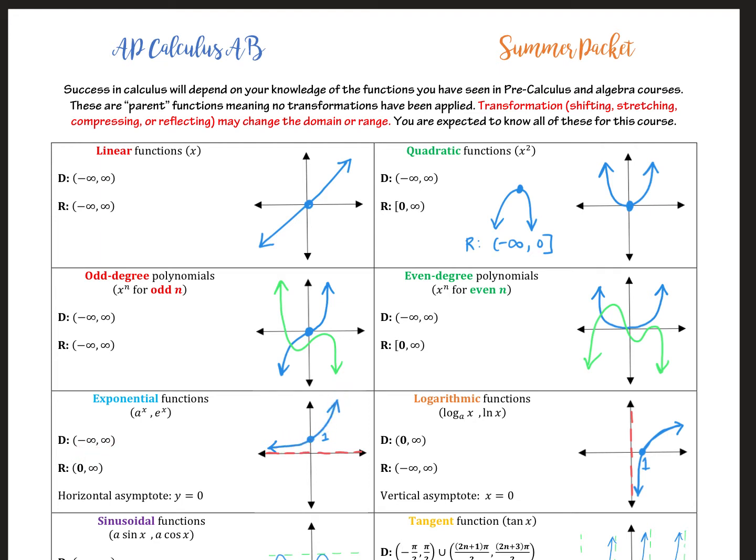The domain, again, is all real numbers. The range is only positive numbers. So notice there's a parenthesis here for 0, because 0, it can never hit 0. And we call that a horizontal asymptote. So notice my dash red line here. That's the horizontal asymptote, y equals 0.